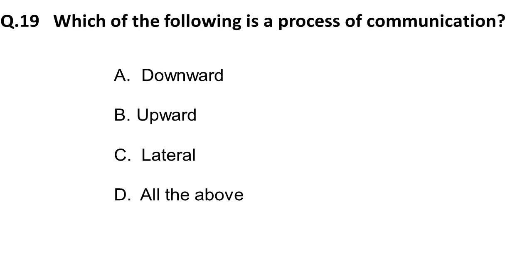Question 19: Which of the following is a process of communication? Options: A) downward process, B) upward process, C) lateral process. All three — downward, upward, and lateral — are processes of communication, so all of the above is the correct answer.